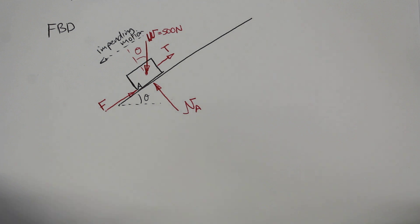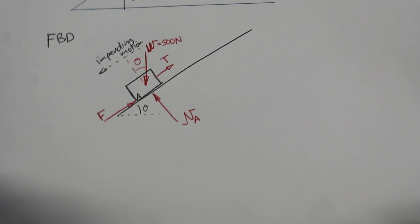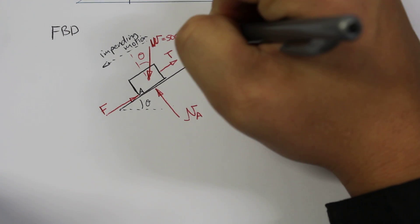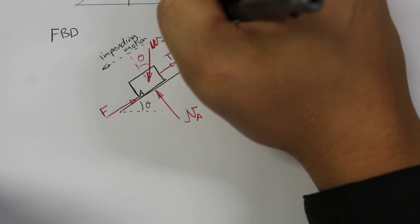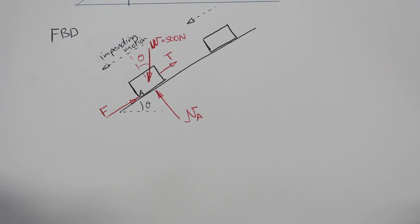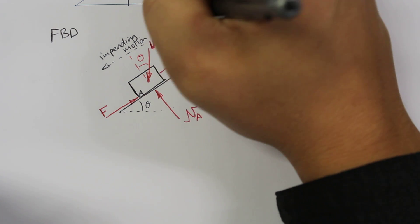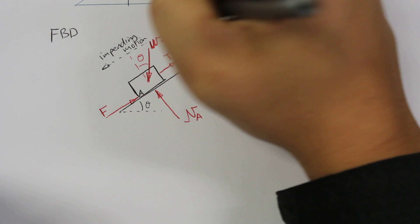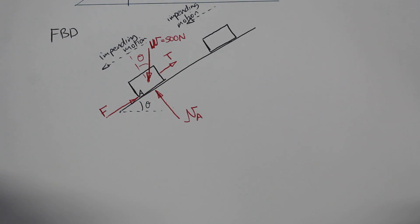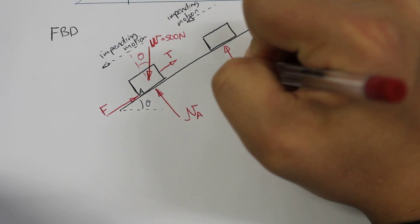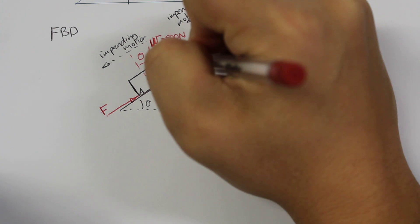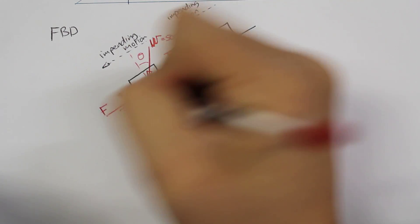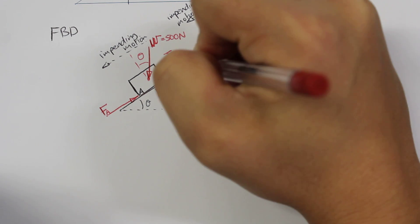We can also draw a free body diagram for block B. So here we'll draw the second block. Block B also has an impending motion down the incline, so that's also going to be moving down the incline. We'll have a normal force for that block as well, we'll call it NB. This one here was called FA, so this would be called FB.